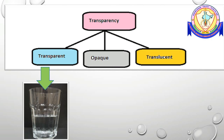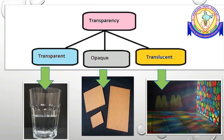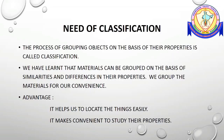Materials through which objects can be seen but not clearly are known as translucent. Frosted glass, colored glass, and certain plastics are translucent. On the other hand, materials through which you cannot see at all are called opaque. You cannot tell what is kept in a closed wooden box, a cardboard carton, or a metal container. Wood, cardboard, and metals are examples of opaque materials.